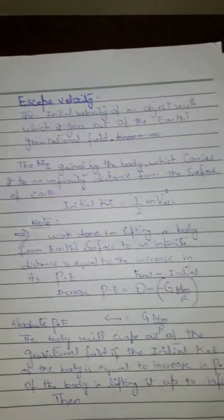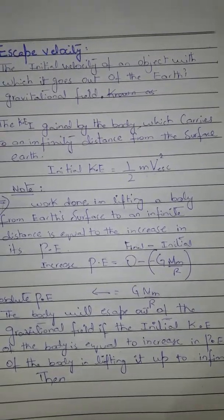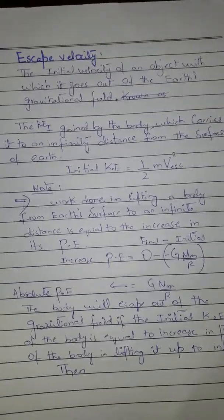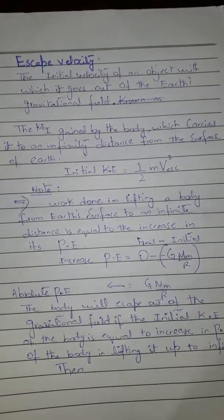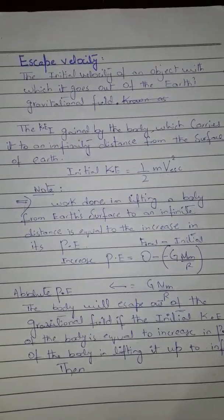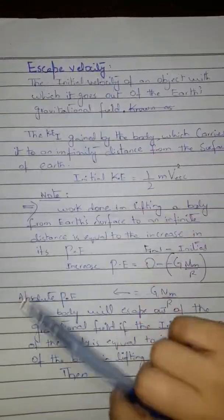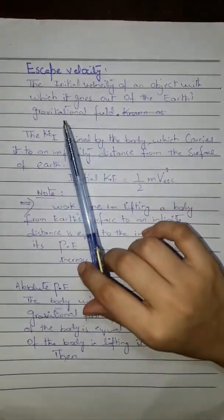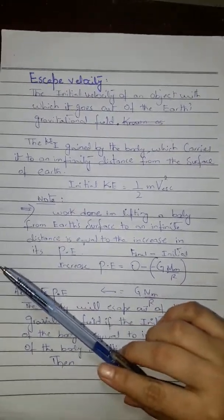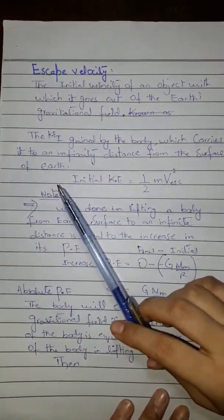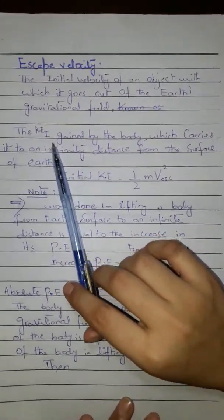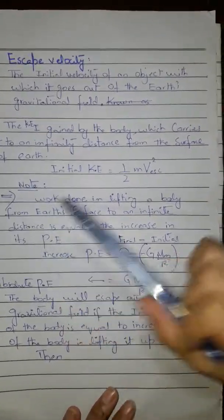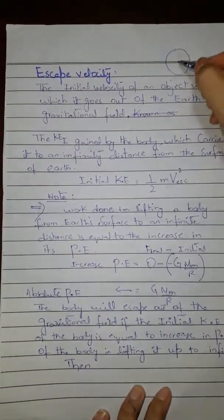With increasing initial velocity, the object rises to a greater height before coming back. If we keep increasing the initial velocity of an object, a stage comes when it will not return to the ground — it will escape out of the influence of gravity. When the gravitational attraction is zero, the body is out of the gravitational field. For the body to escape, it must have kinetic energy sufficient to carry it to an infinite distance from the surface of the earth.